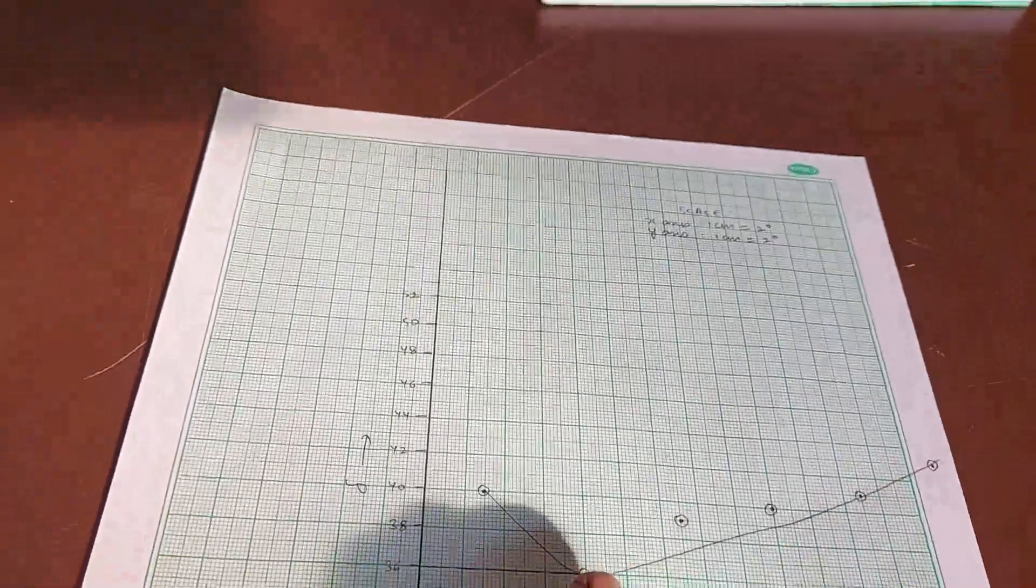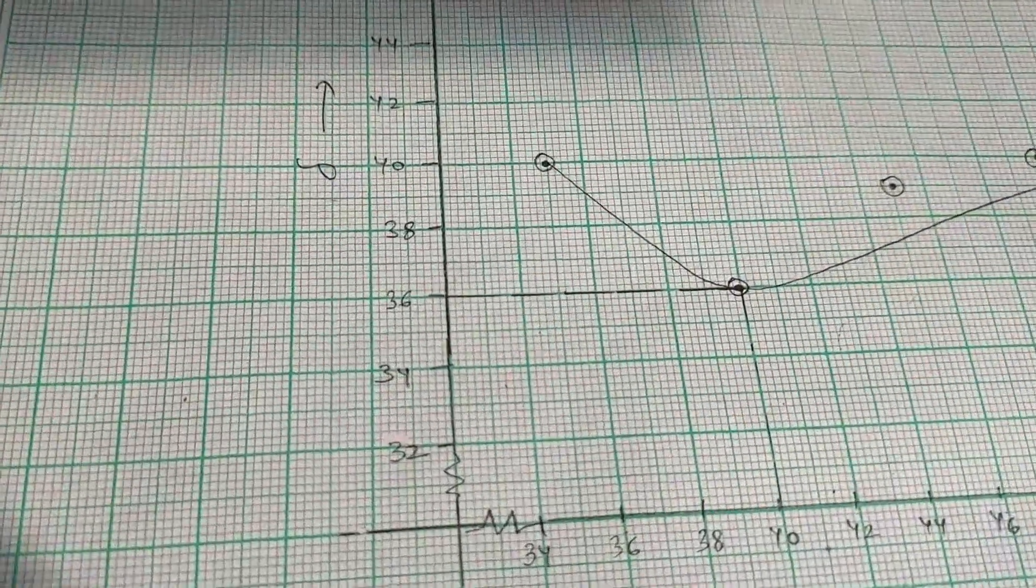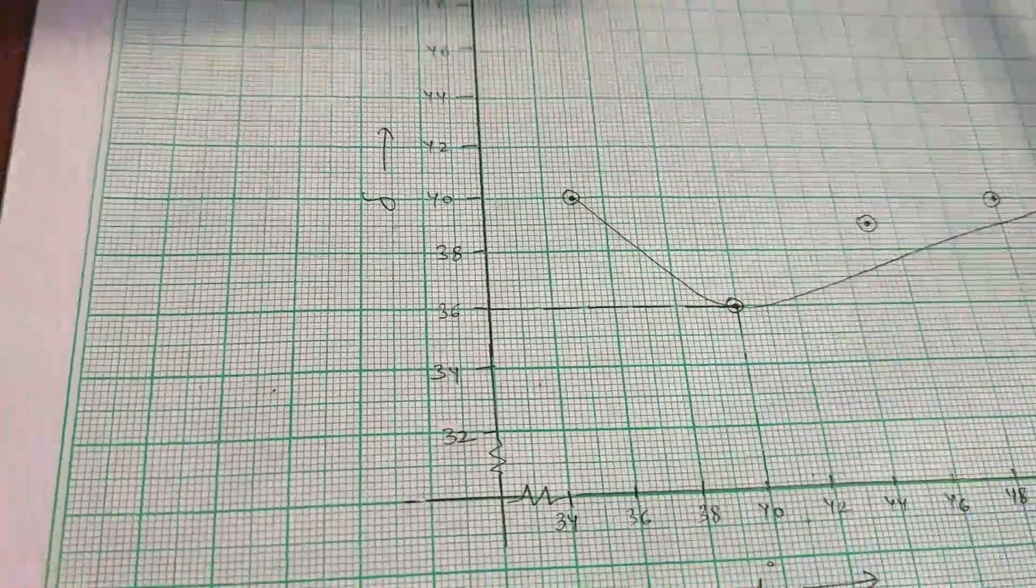This angle, as you can read from the graph, comes out to be 36. 36 degrees is the angle of minimum deviation.